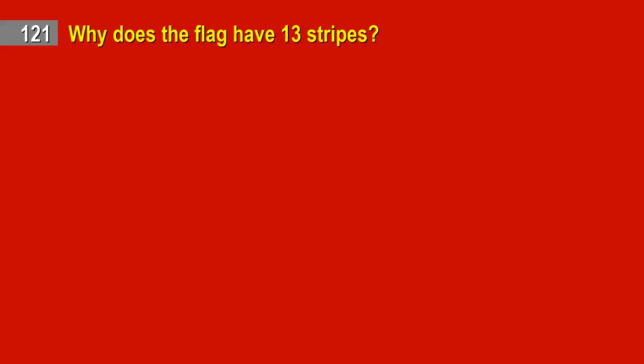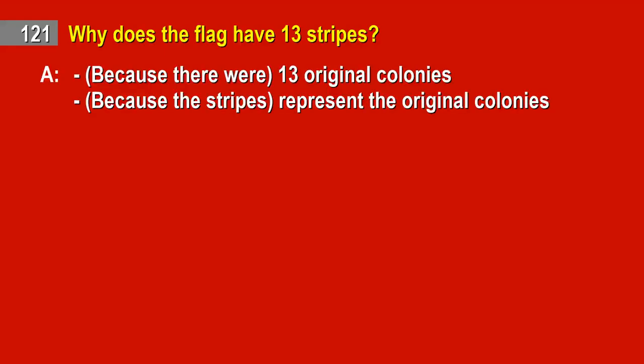Question 121. Why does the flag have 13 stripes? Answer: Because there were 13 original colonies. Because the stripes represent the original colonies.